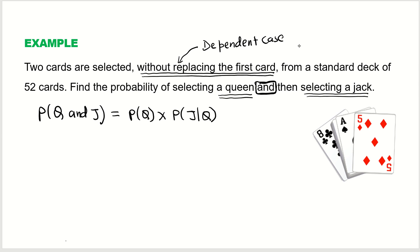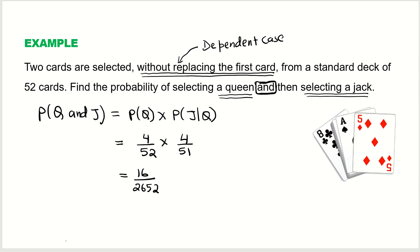P(queen) = 4/52, since there are 4 queens in the deck. After removing a queen, 51 cards remain and all 4 jacks are still there, so P(jack | queen drawn) = 4/51. Therefore, P(queen and jack) = 4/52 × 4/51 = 16/2652, which as a decimal is approximately 0.006.